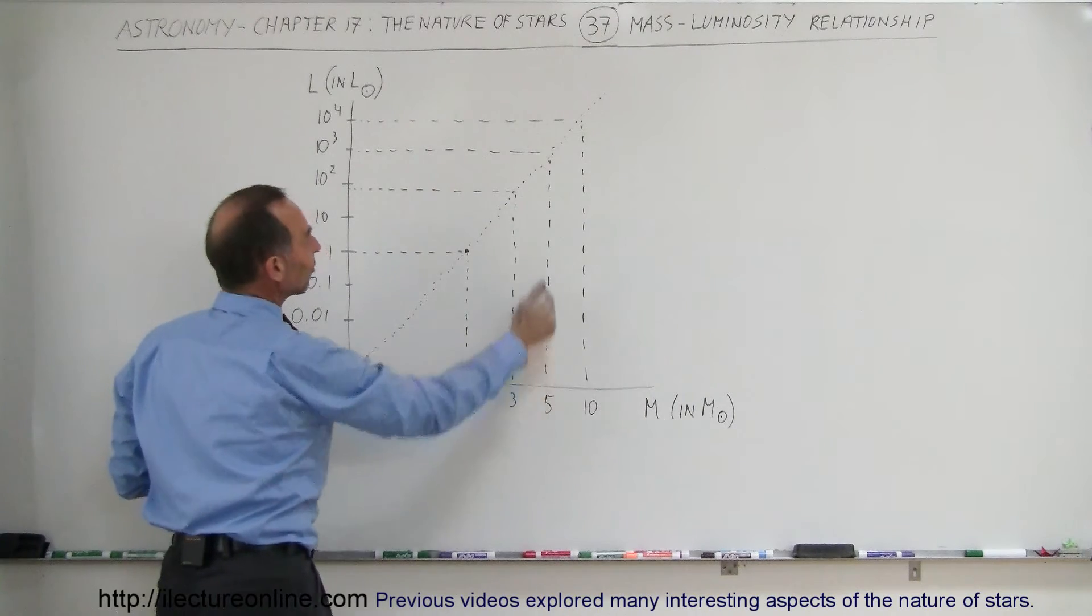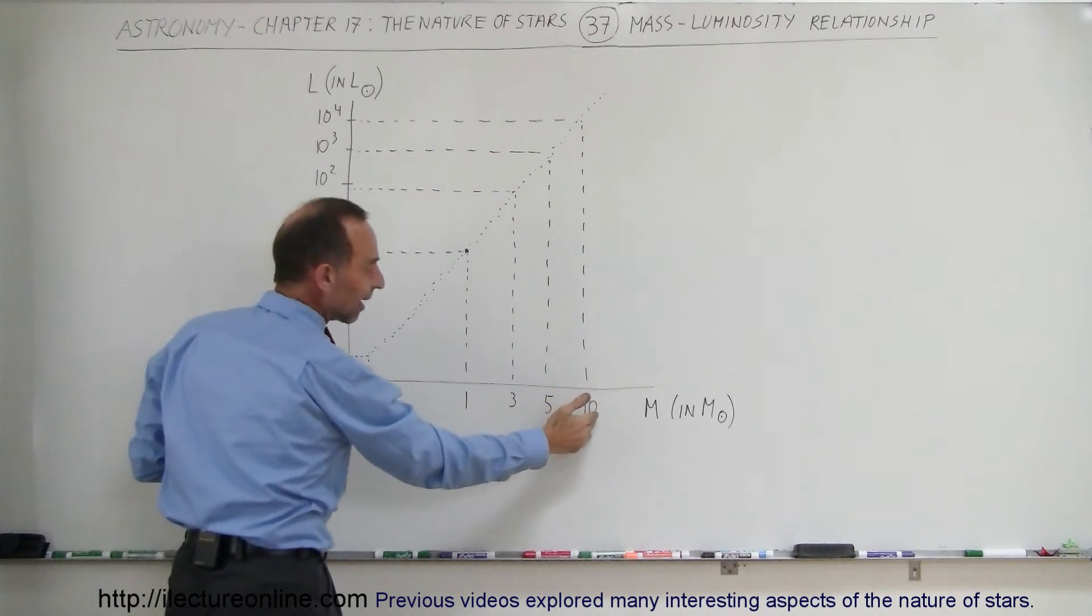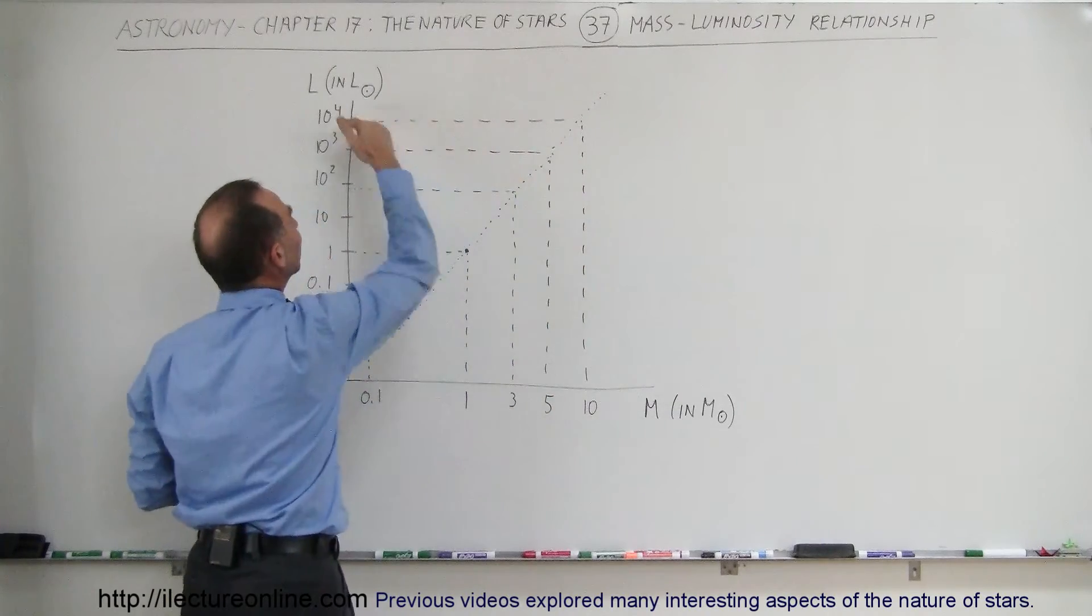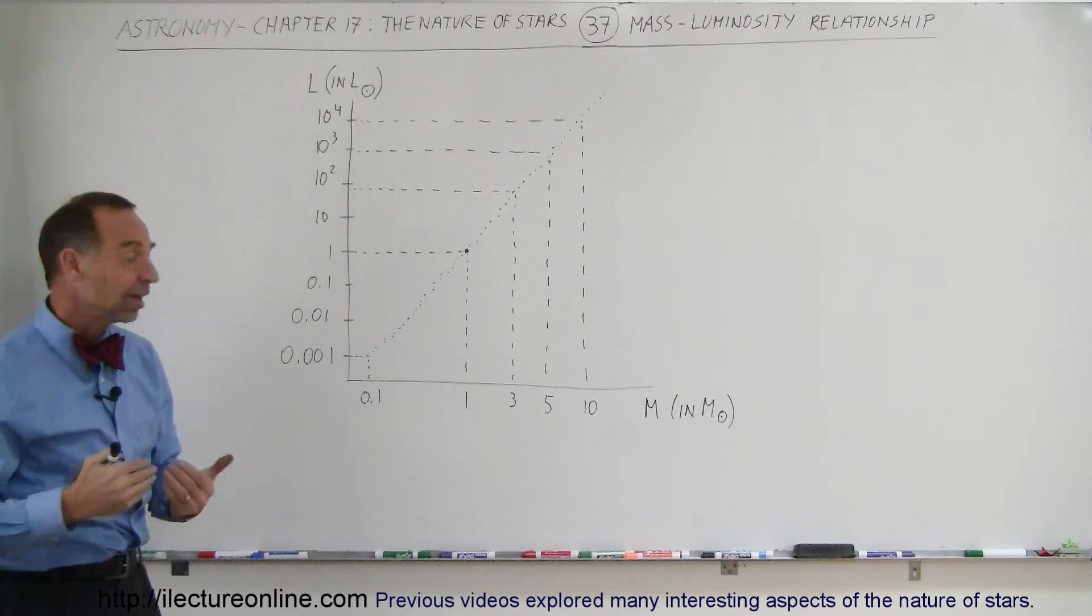If you have a star that's 5 times the mass, it's roughly 1,000 times the luminosity. If you have a star that is 10 times the mass of the sun, it has roughly 10,000 times the luminosity of the sun.